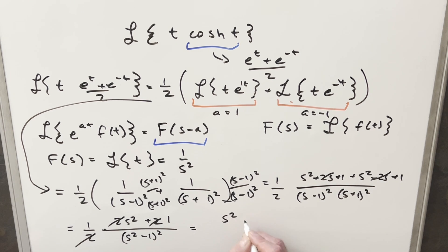We're left with in the numerator s squared plus one. Multiplying this out, we have s to the fourth minus two s squared plus one.